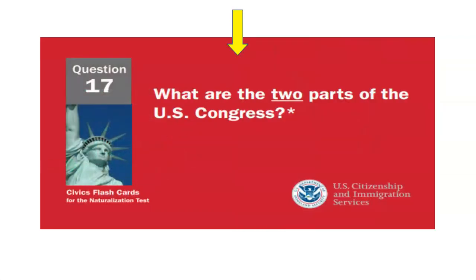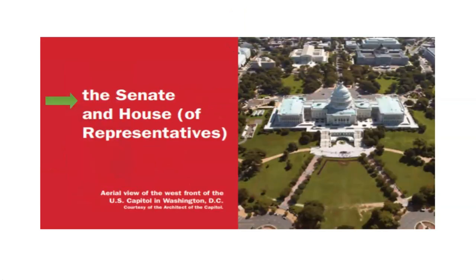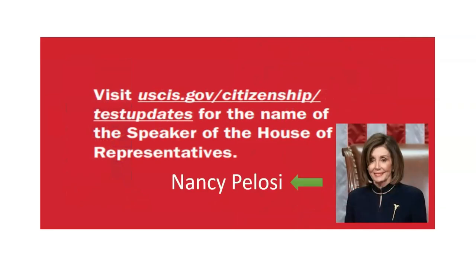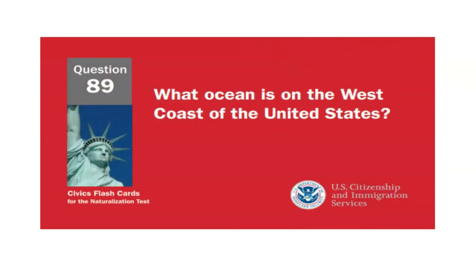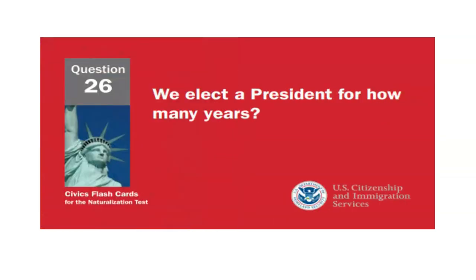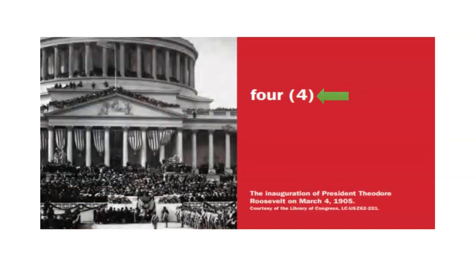What are the two parts of the U.S. Congress? The Senate and the House of Representatives. What is the name of the speaker of the House of Representatives now? Nancy Pelosi. What ocean is on the west coast of the United States? Pacific Ocean. We elect a president for how many years? Four years.